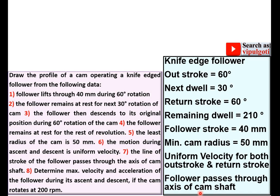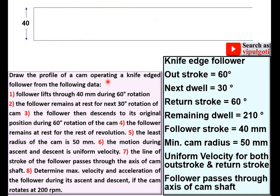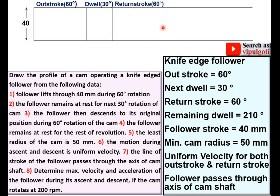Let's start with the displacement diagram. First draw a horizontal line with random length, then mark the stroke length as 40 mm — take the height as 40 mm and draw another horizontal line. Now start from the out stroke at 60 degrees. Take the scale as 1 cm equals 10 degrees, so the out stroke length is 6 cm. The next dwell is 30 degrees — 3 cm. Then the return stroke is 60 degrees — 6 cm. The remaining dwell is 210 degrees — 21 cm, but use the break symbol if it doesn't fit.